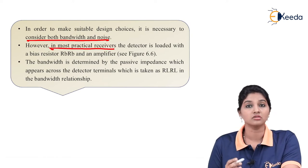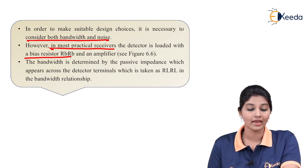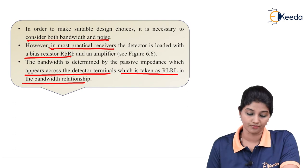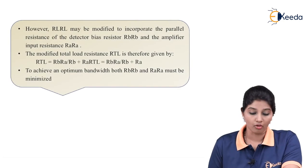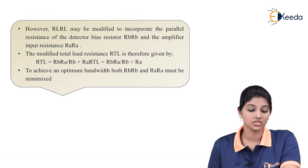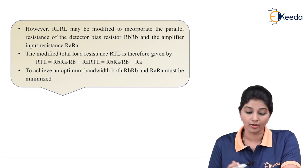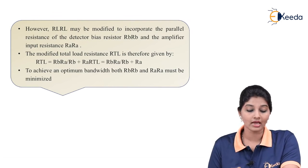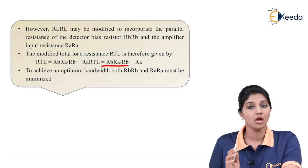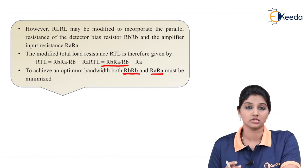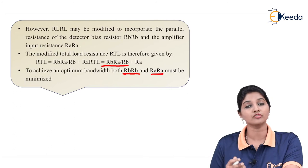In most practical receivers, the detector is loaded with a bias resistor RB and an amplifier. The bandwidth is determined by the passive impedance appearing across the detector terminal, taken as load resistance RL. However, RL can be modified to incorporate the parallel resistance of the detector bias resistor RB and the amplifier input resistance RA. The modified total load resistance RTL is given by: RTL = (RB × RA) / (RB + RA). To achieve optimum bandwidth, the values of both RB and RA must be small.